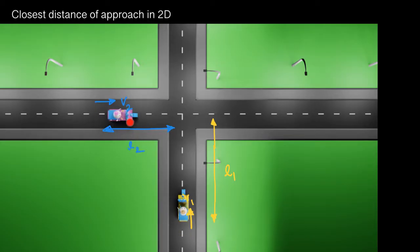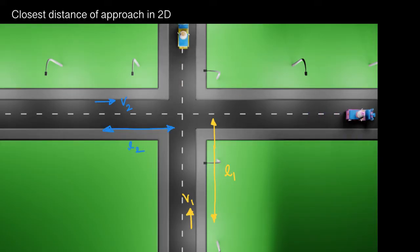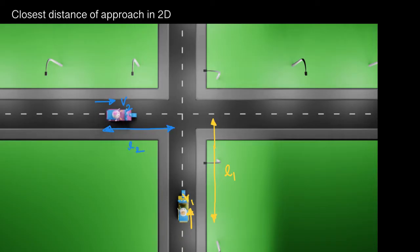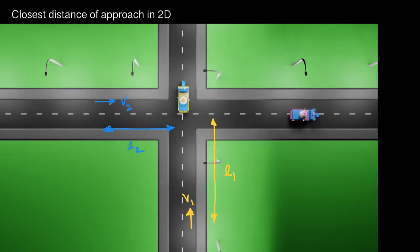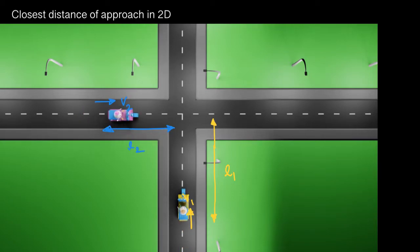The distance between them is decreasing, coming to a minimum, and then increasing again. To solve this problem we will use the concept of relative velocity, which means we will look at the motion of person 2 with respect to person 1.